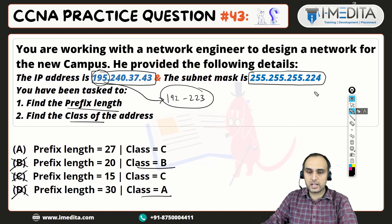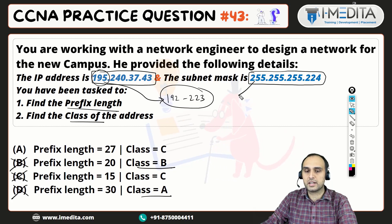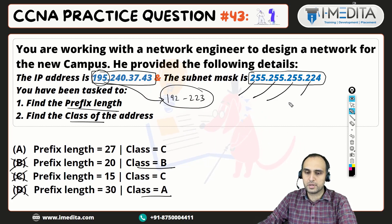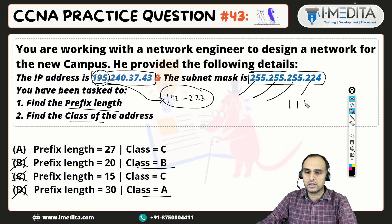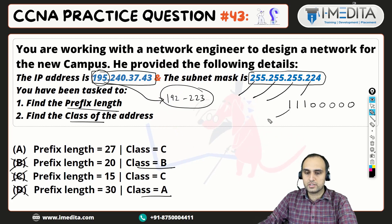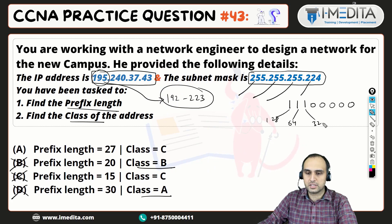If you want to really calculate what the prefix length is, then we have to write the mask. So it will be 8 bits for each of the first three octets. If we want to write 224 in the form of bits, that will be 128, then 64, then 32, and then zeros. So 128 plus 64 plus 32 equals 224.